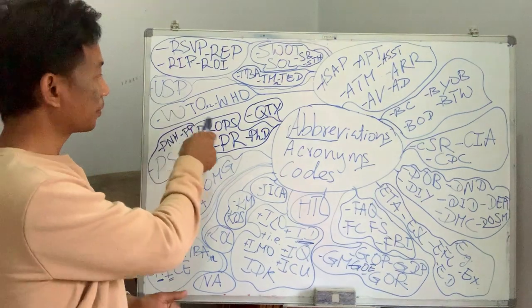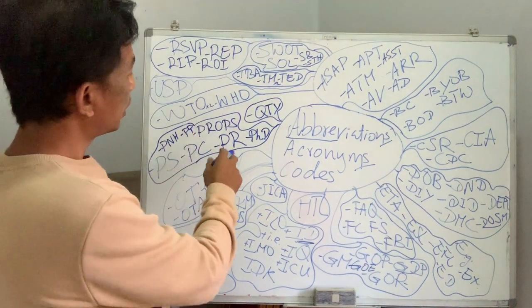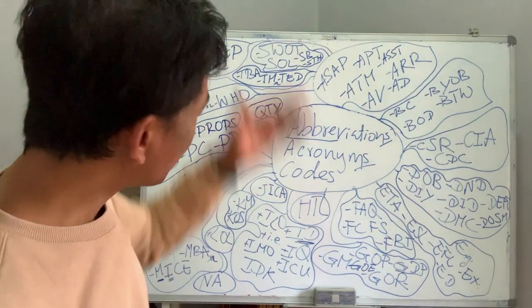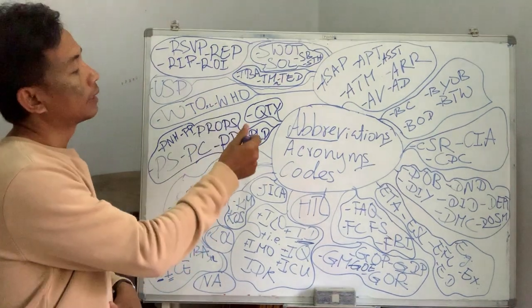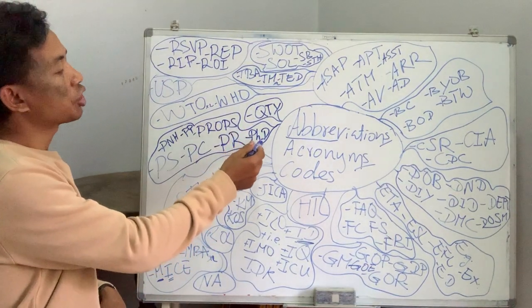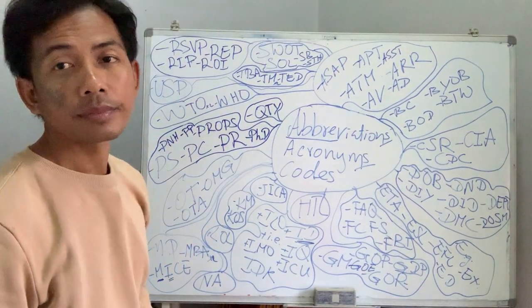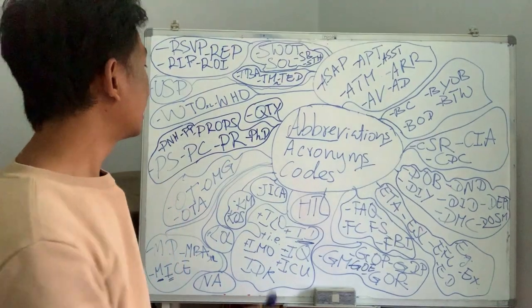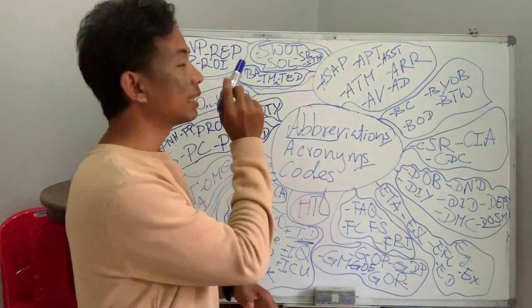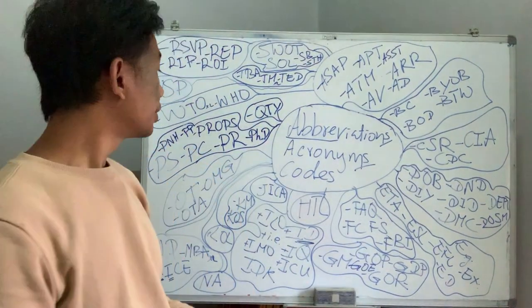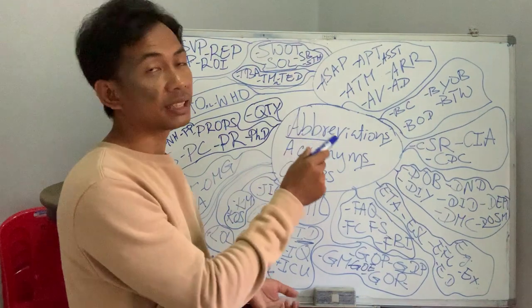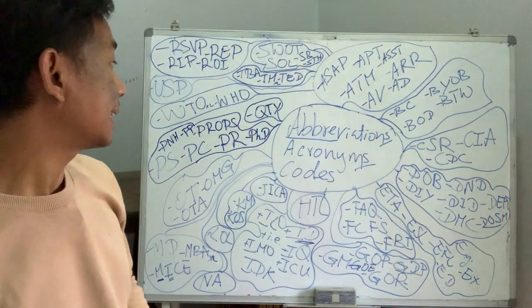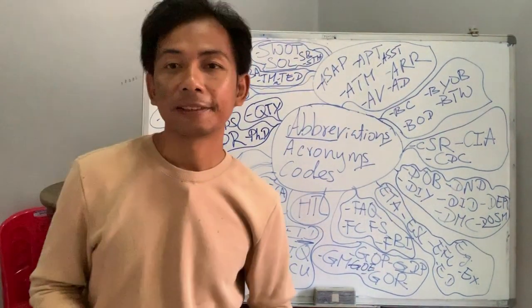PhD — it comes from philosophy and doctorate — doctor of philosophy. So you get the title doctor. This is the highest level in education.